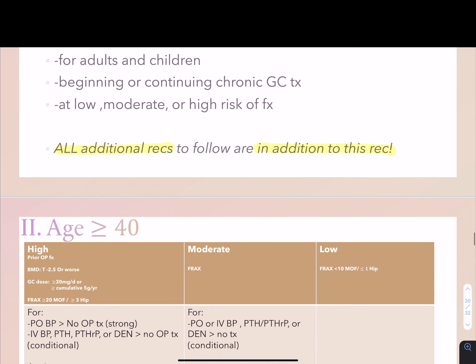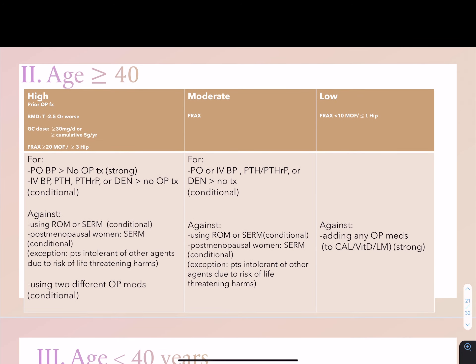For adults age 40 or older in the high-risk group: giving oral bisphosphonate over no osteoporosis medication is strongly recommended. IV bisphosphonate, PTH or PTH-related peptide, or denosumab over no osteoporotic medication is conditionally recommended. Using romosozumab or SERMs for this group, or SERMs for postmenopausal women, is conditionally recommended against — with the exception of patients intolerant of other agents due to risk of life-threatening harms.